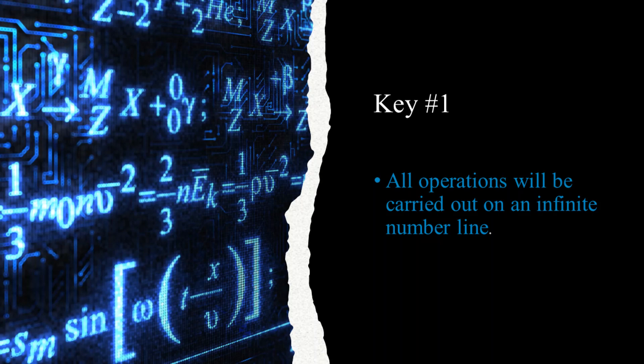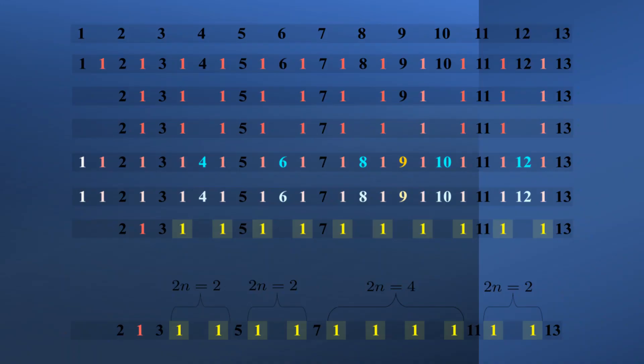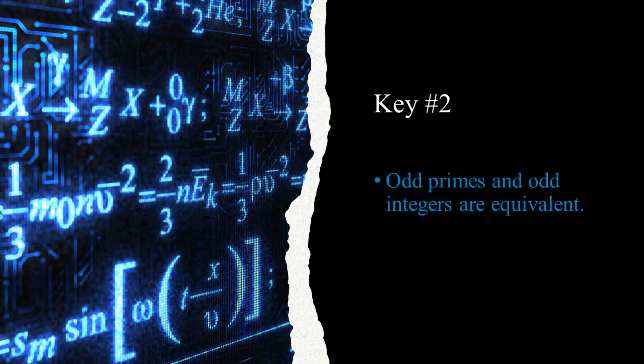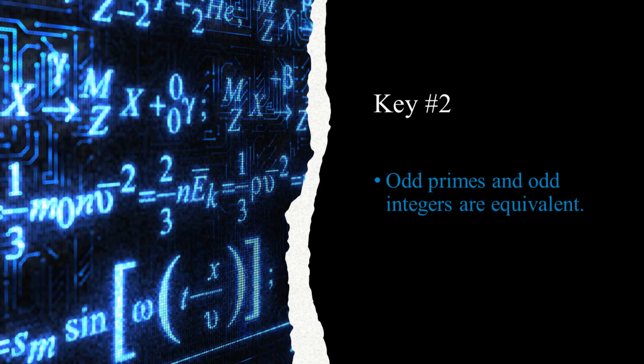Key 1: we will perform all operations on a number line. Since a number line is infinite, then all operations we perform on this number line will be applicable infinitely. Key 2: odd primes and odd numbers are equivalent. I know this may sound obvious, almost silly, but trust me, it is not as simple or as obvious as you might think.